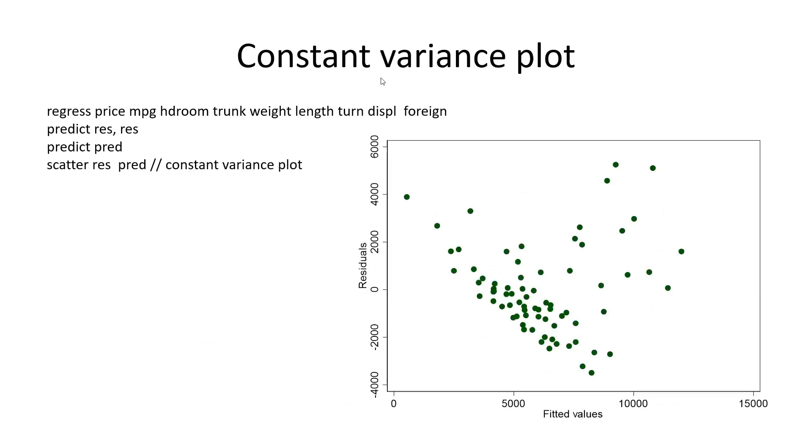So let's look at the constant variance plot. Oh! We see trouble. We see a classical funnel plot. Variance is increasing. Variance is small here, large there. So that means we shouldn't have interpreted the output on the previous page because the assumptions are violated.